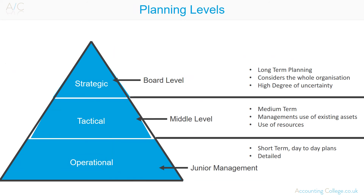There are three levels of planning: strategic, tactical and operational. Strategic planning is an organisation's objectives and strategies — objectives is where an organisation wants to be, and strategies is how an organisation intends to get there. Strategic planning is done at board level. It is long-term planning which considers the whole of the organisation, matching its activities to the external environment, and identifying future requirements and matching those to resources and capabilities. With strategic plans there is a high degree of uncertainty. Organisations should have controls in place to monitor strategies, to see how well objectives are being met and to recommend corrective action if required.